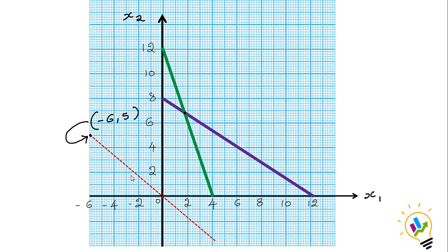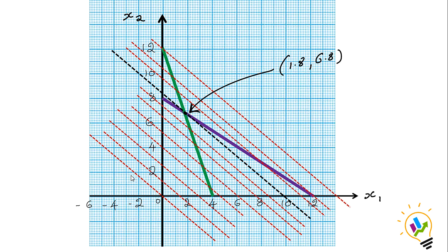I am going to draw multiple lines which are parallel to the original line. These are multiple lines drawn parallel to the isoprofit line. At one point, these lines will intersect with the corner points.